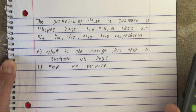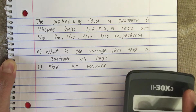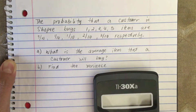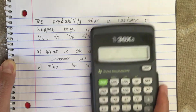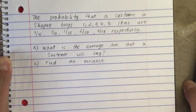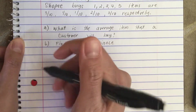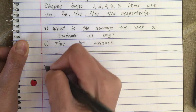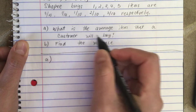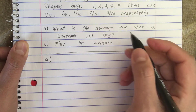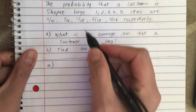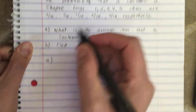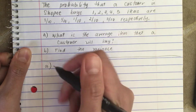So A, what is the average number of items that a customer will buy? And B, find the variance. So first let's do A.